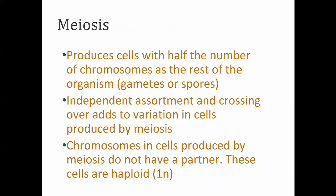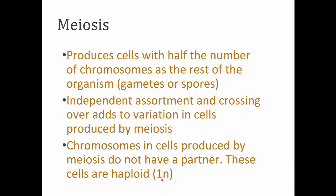Meiosis is another type of cell division we'll model today. Meiosis produces cells that end up having half the number of chromosomes as the somatic cells. This is how plants make spores and how humans and many animals make gametes. Independent assortment occurs during this process as well as crossing over, which adds to variation in the gametes or spores produced. The cells made at the end of meiosis are haploid - they do not have a homologous partner, so they're said to be N or 1N. In the case of a human egg or sperm, there would be 23 chromosomes.